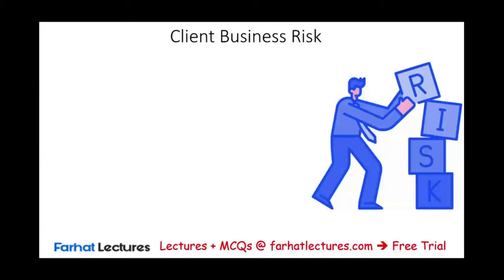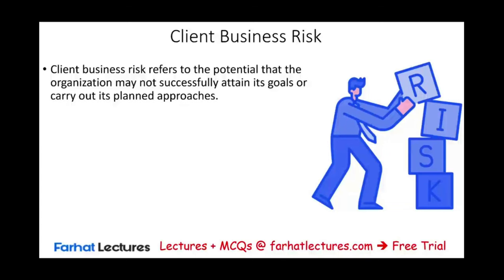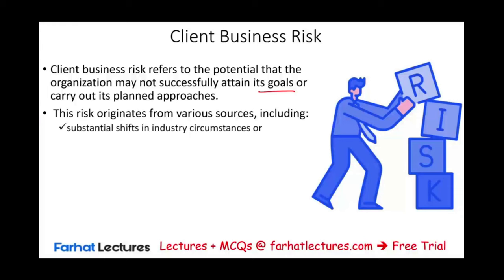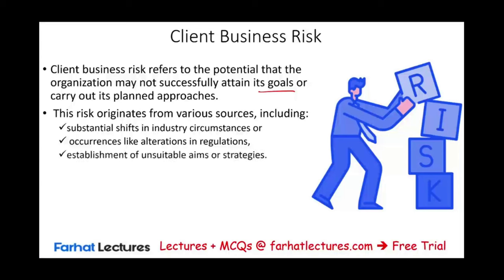Client business risk refers to the potential that the organization itself may not successfully attain its business goals or carry out its planned approaches. Risk arises from factors beyond your control, but you must take this into account when planning the audit. Examples include: substantial shifts in industry circumstances — such as the industry becoming more technology-driven while your client is not; changes in regulation that the company cannot keep up with; and establishing unsuitable aims or strategies.